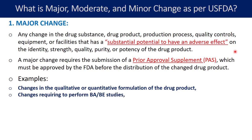The next example of a major change is changes requiring performance of bioavailability or bioequivalence studies. For instance, if you are changing the polymorph, the bioavailability may change, so you have to perform a bioavailability study. Similarly, if you are changing the reference listed drug product, the bioequivalence study has to be performed again. These changes are considered major changes according to the US FDA.